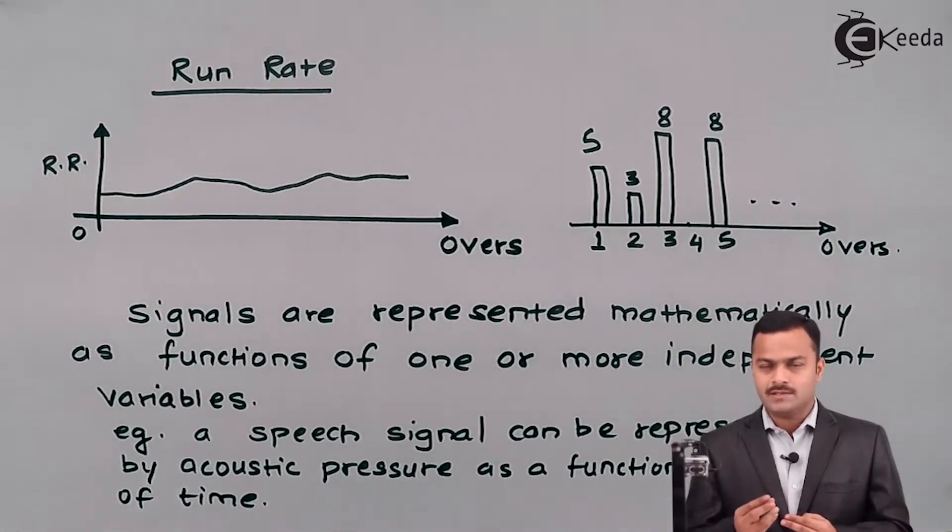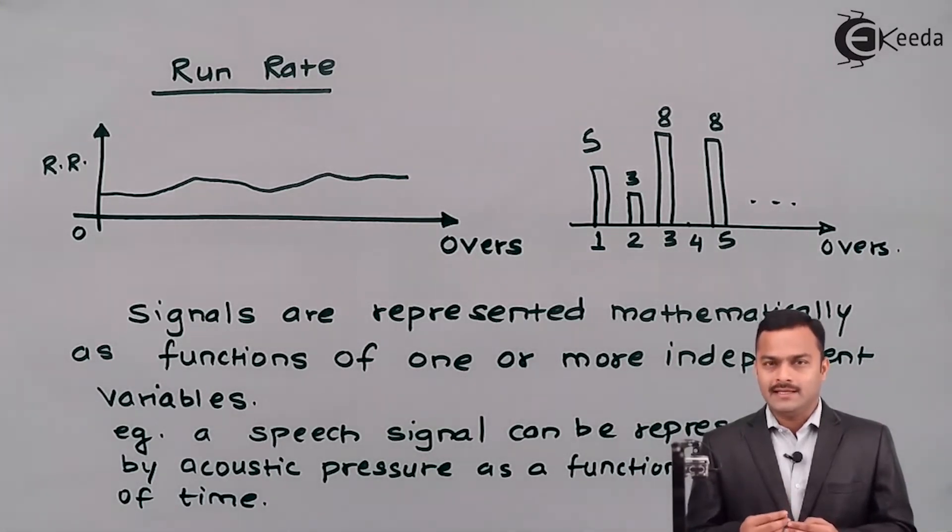Okay, in the end I will summarize: signals are nothing but a specific pattern containing the information, and secondly every graph, every pattern can be mathematically considered as an equation in which one variable may depend on one or more independent variables. Thank you.